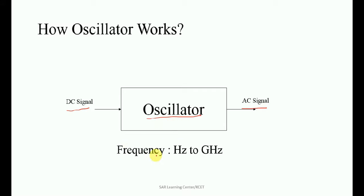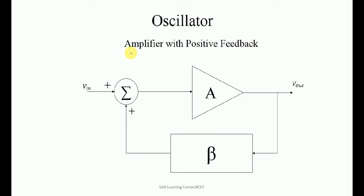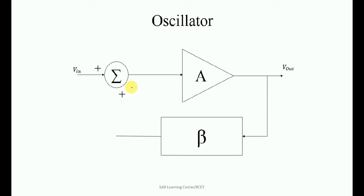The oscillator can produce a frequency in the range of hertz to gigahertz. The oscillator circuit is nothing but a positive feedback amplifier. Now we are moving to the working of the oscillator. First, the V-in is directly applied to the amplifier. This is the operational amplifier, and the gain of the amplifier is A.